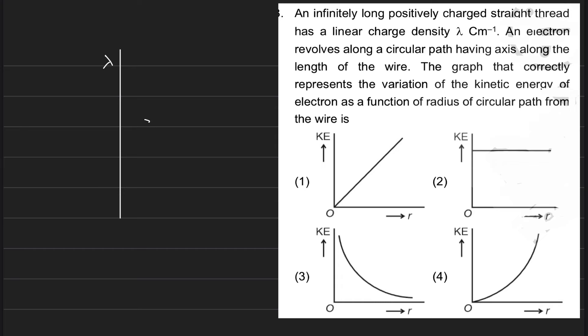Now I'm telling you that an electron revolves on the axis side of a circular path around the wire. So tell me, what will be the graph of kinetic energy versus radius?